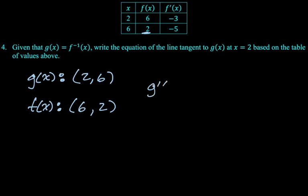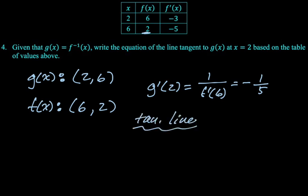I'm trying to find g'(2), and now I know that that is 1/f'(6). And f'(6) is -5 from the table. So this will be 1/(-5) or -1/5. And then our tangent line, make sure you use the ordered pair from g(x). So our tangent line is going to be y - 6 = -1/5(x - 2). That's the problem set. I hope this was helpful and good luck.